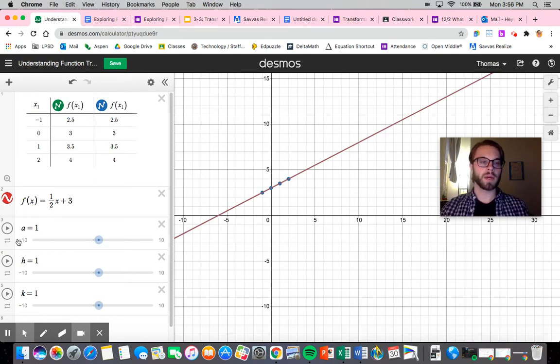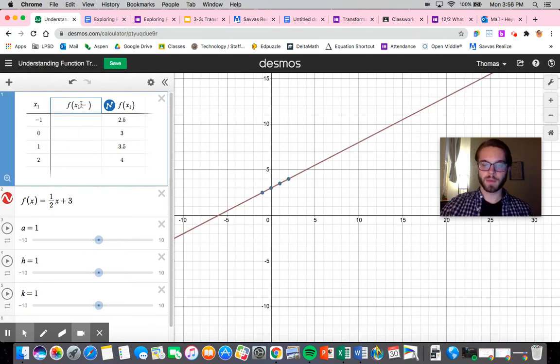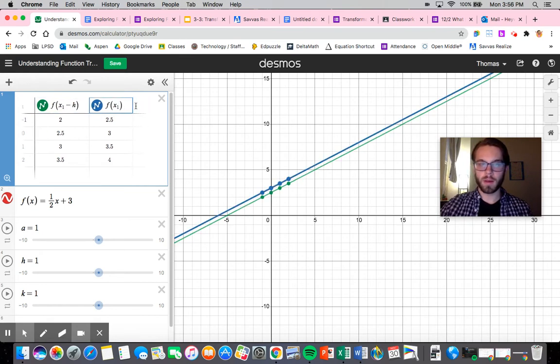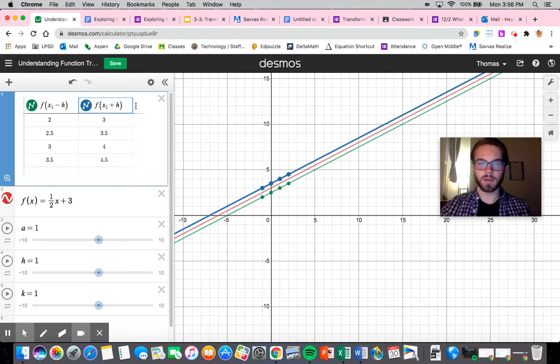So for right now, we're going to start with the h, and this is similar to what you were exploring. So I did minus h, and I can do plus h. So you'll notice two things have happened. One has ended up above, and one has ended up below.